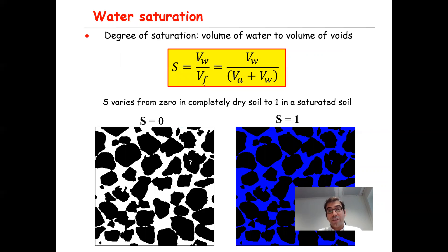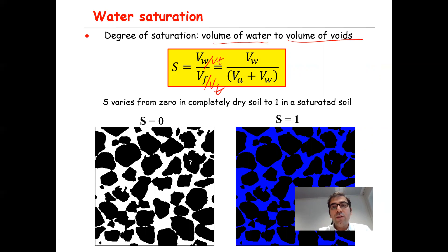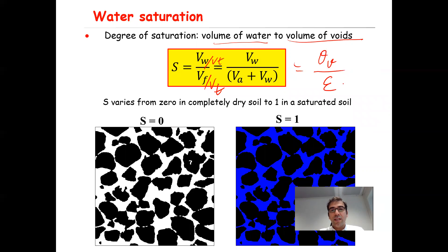There is another quantity called degree of saturation, which is the volume of water to volume of void — that is volume of fluid, which is air and water. So that will be Vw divided by Vf, which equals Va plus Vw. If you divide everything by Vt, you get Vw divided by Vt equals theta_v, divided by Vf divided by Vt, which is the definition of porosity. So saturation equals volumetric water content divided by porosity.